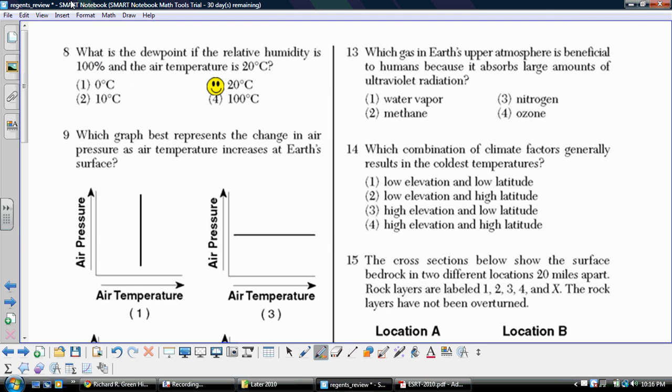Okay, welcome back. We've got to pick right back up at question 8. I already got it on there. This is an interesting type of question involving dew point and relative humidity, given readings off of a psychrometer. We're told we are looking for the dew point if the relative humidity is 100% and the air temperature is 20 degrees Celsius.